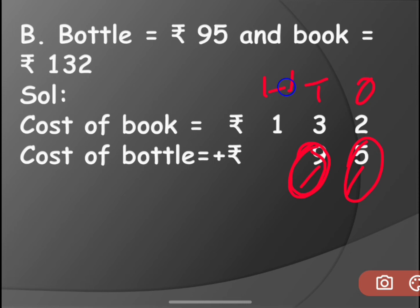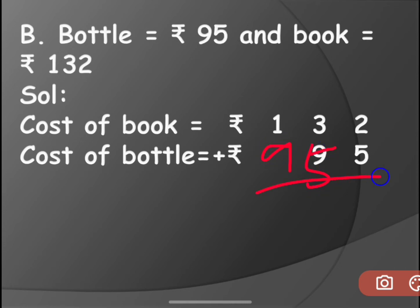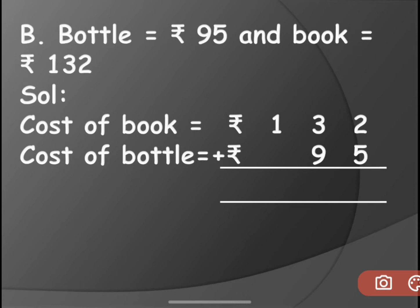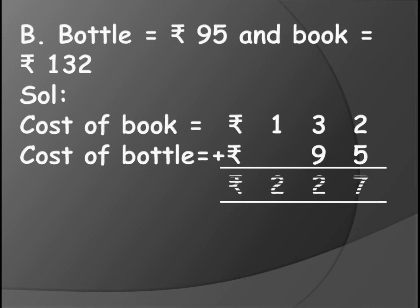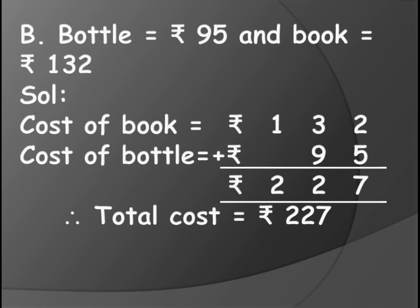Make sure you are writing according to the columns, according to the place values — 1s under 1s, 10s under 10s. If you don't write like this it will be a mess and the answer will be wrong, because this 1 is 100s and 9 tens should be written under 10s only. Now, 2 plus 5 gives us 7. Then 9 plus 3 becomes 12 — you write the 2 down and carry the 1 to 100s, same as the numbers we have learned. Then 1 plus 1 becomes 2. So the total cost is 227 rupees.